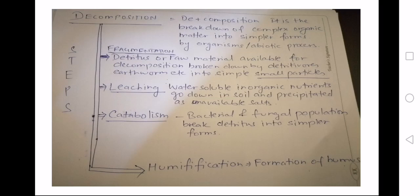The detritivores are the organisms which actually perform the fragmentation. They can be earthworms or insects into simple small particles. Now comes the leaching process, where the water-soluble inorganic nutrients go down into the soil in precipitate form and they become unavailable salts in the soil. Sometimes organic substances also leach out.